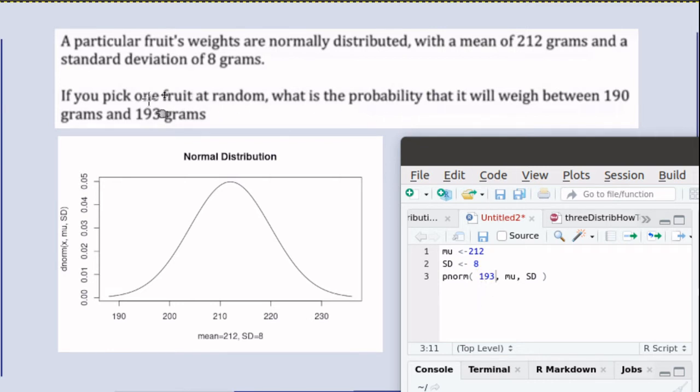So if we look at 193, that's one of the two numbers that we're looking at, the larger one. If we look at PNORM of 193 with that mean and that standard deviation, it will tell us the probability of getting 193 or something less than 193.